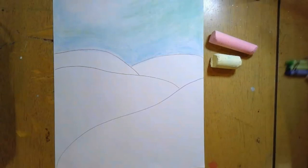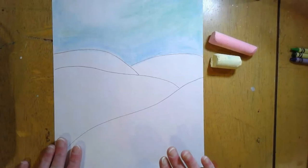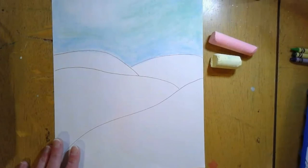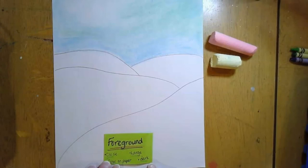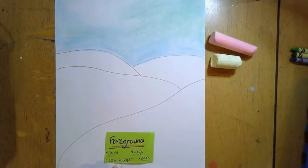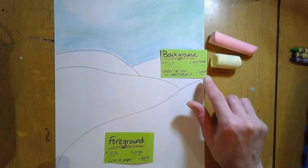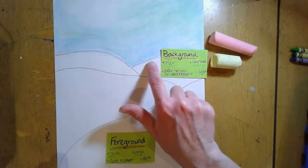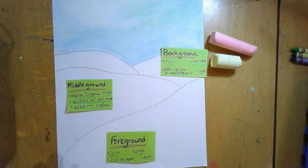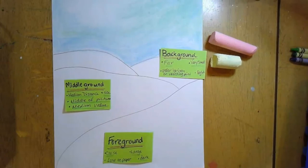I'm going to color these mountains. If you remember the different facts about the foreground, middle ground, and background, in the foreground things are a dark value — close, large, low on the paper, and dark. In the background, up here by the horizon line, things are a light value — far, very small, and very light. And in the middle ground, they're medium value, medium distance and size, and in the middle of the picture. So I'm going to color this hill very dark, this one medium, and these two very light.